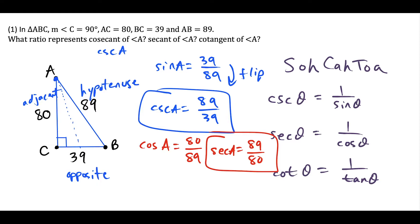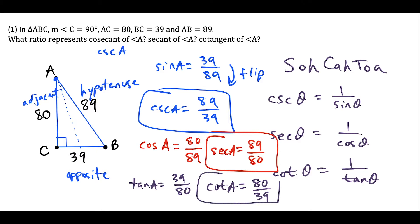The last one: we want to find cotangent of angle A. So we find tangent of angle A first. Tangent of angle A is the ratio of the side opposite of A, which is 39 units long, over the side adjacent, which is 80 units long. So cotangent of angle A is the reciprocal of that, which is 80 over 39. This is our solution to the first question.